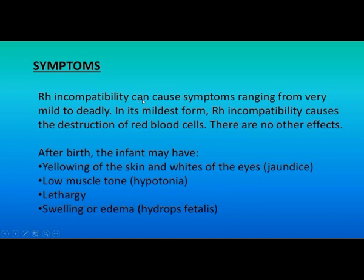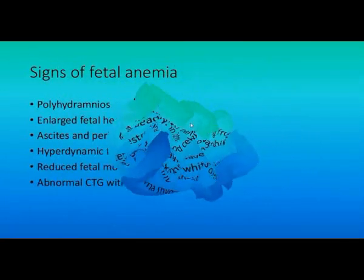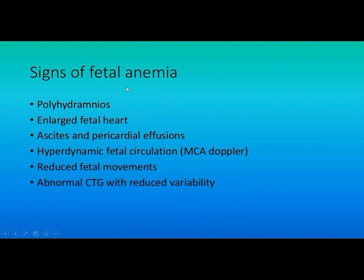In RH incompatibility, symptoms can range from very mild to deadly. RH incompatibility causes destruction of the red blood cells of the fetus. After birth, the infant may have yellowing of the skin — that is jaundice — yellowing of the eyes, low muscle tone which is hypotonia, lethargy, and swelling or edema which is hydrops fetalis. Signs of fetal anemia include polycythemia, enlarged fetal heart, ascites and pericardial effusion, hyperdynamic fetal circulation, reduced fetal movements, and abnormal CTG with reduced variability.